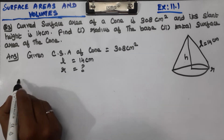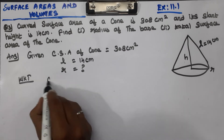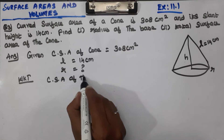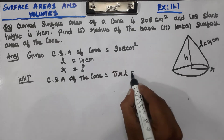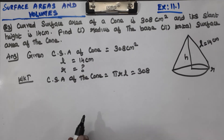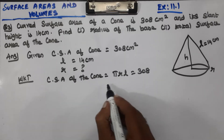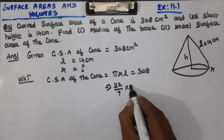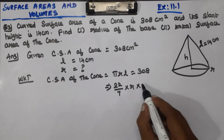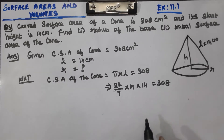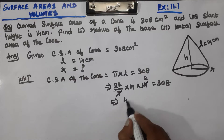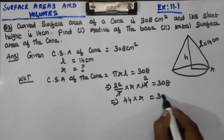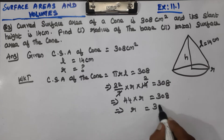So we know that the curved surface area of the cone — what is the formula? Pi R L. Pi R L value is 308. Pi is 22 by 7. R L value is 308.